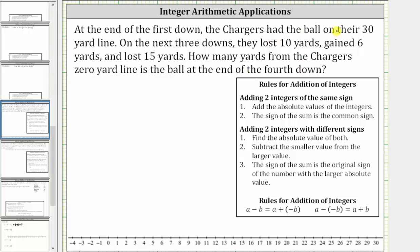Because the ball begins on the 30-yard line, we begin with positive 30. And then they lost 10 yards, so we add negative 10. The negative 10 indicates the loss of 10 yards.